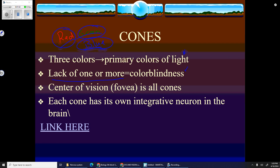Each cone has its own integrative neuron in the brain. That makes a cone to your brain 10,000 times more sensitive than a rod. It takes 10,000 rods for one nerve in the brain, but each cone has its own nerve.